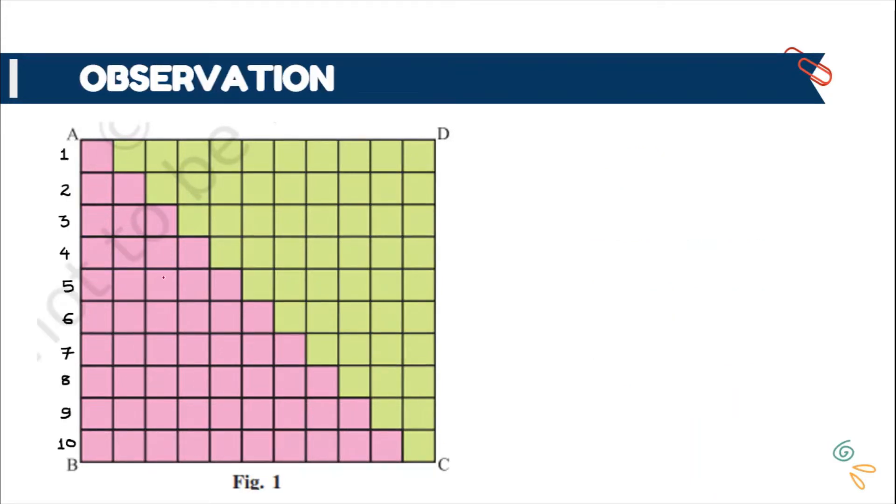Now you can clearly see the pink color region looks like a staircase. So the length of 1st stair is 1 unit, there is only 1 box. The length of 2nd stair is 2 units, there are 2 boxes. The length of 3rd stair is 3 units, there are 3 boxes and likewise, if you will observe the last stair in this pink color, there are 10 boxes and its length will be 10 units.